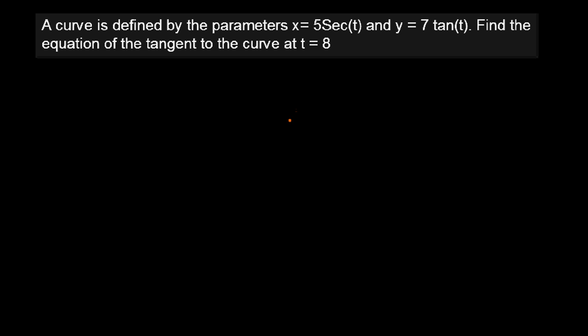A curve is defined by the parametric equations x equals 5 sec t and y equals 7 tan t. Find the equation of the tangent to the curve at t equals 7. So we want to find, for this parametric function, the gradient of the tangent when t is equal to 8.